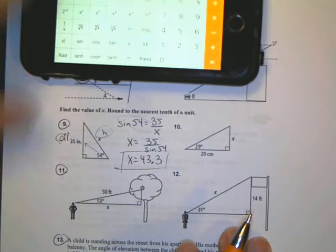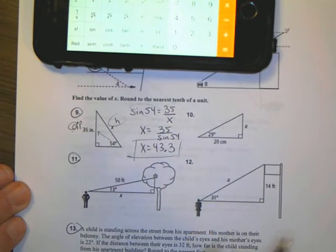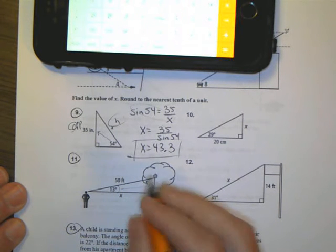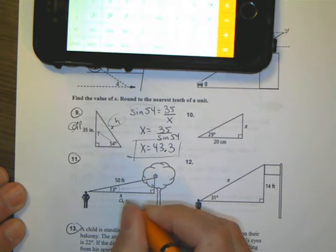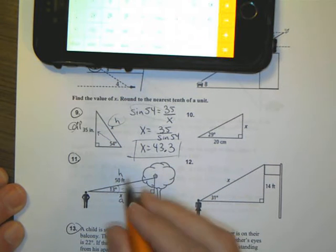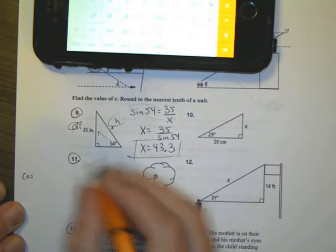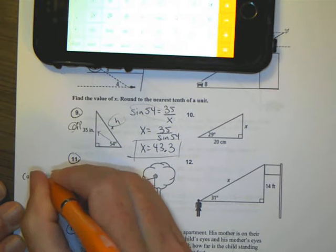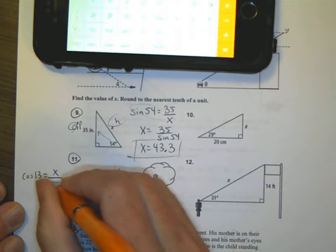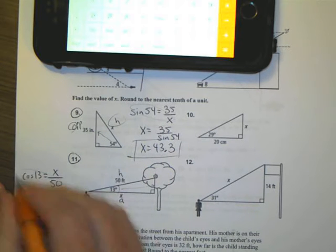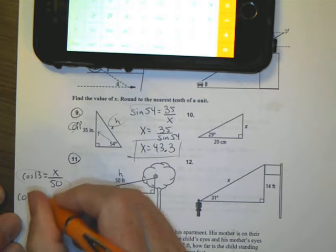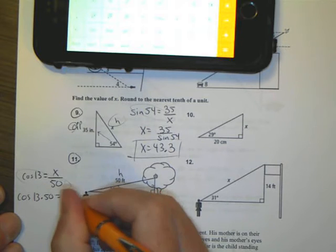Looking at number 11, we have an angle, there's my opposite, which means this is an adjacent, and this is hypotenuse. Because I have an adjacent and hypotenuse, I'm going to go ahead and use the cosine of 13 is going to be equal to my adjacent, X, over my hypotenuse of 50. Cross multiply, cosine of 13 times 50 will equal X.